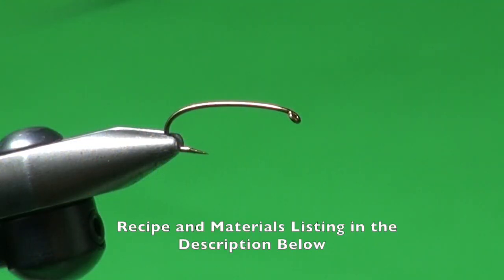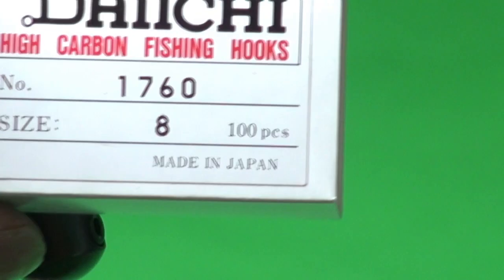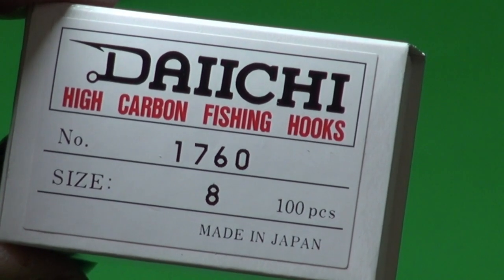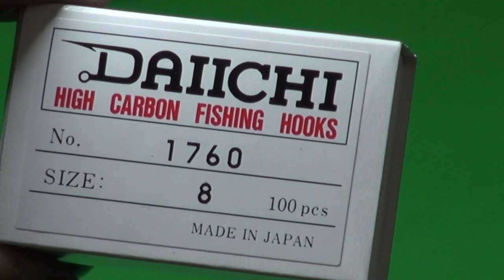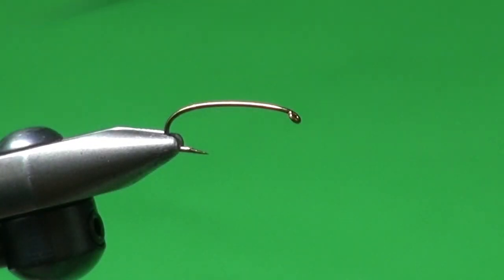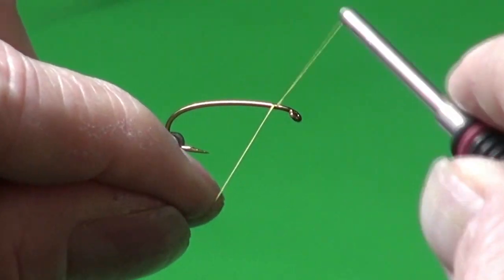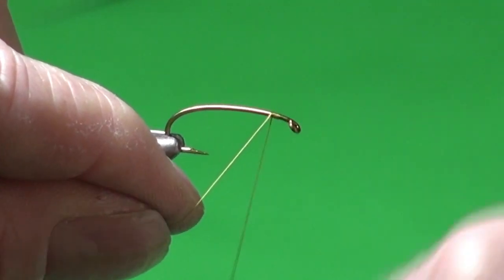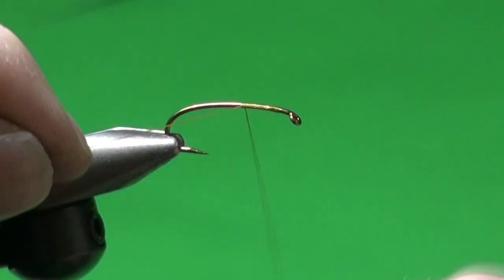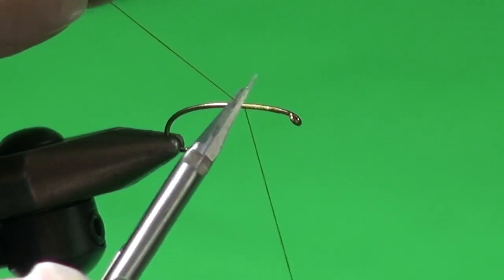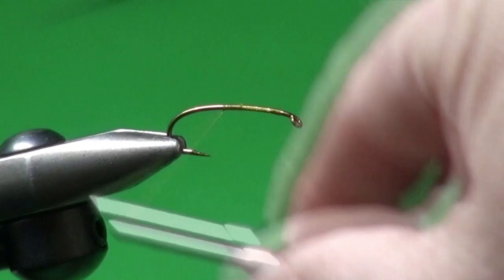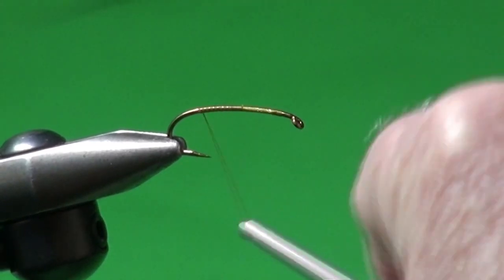So let's tie the traveling chubby. I'm going to use a Daiichi 1760 number eight. You could tie these as big as a six, you can also tie them down to a ten. Eight is probably the most common size I use to match the traveling sedges. And we like these heavy hooks because they make the fly land properly, point down, doesn't flop on its side or back because we're using this fly to imitate the traveling sedge. It's just emerged and sitting on the water and it also creates a great wake so you can strip it.